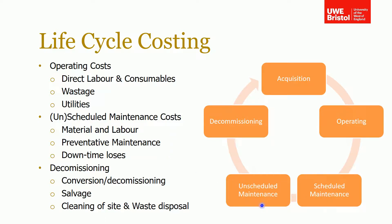The scheduled and unscheduled maintenance costs are grouped together because they involve the same types of costs — mainly material and labor. You might also add preventative maintenance costs to make sure things don't go wrong. Importantly, you need to cost in the downtime losses — not just the cost of fixing a machine, but how much money you've lost as a result of that machine being broken for an hour, a day, or whatever it is.